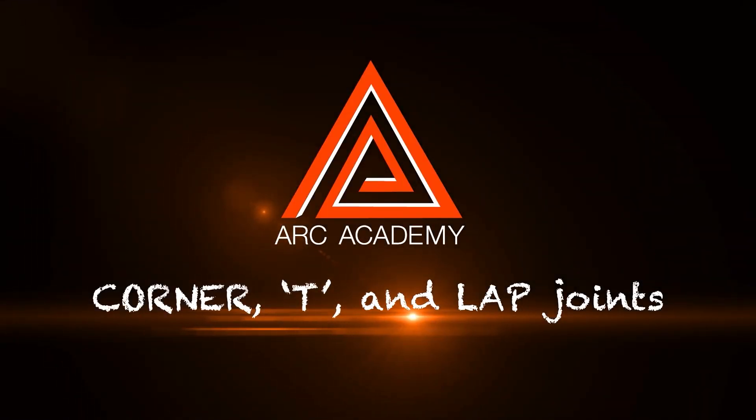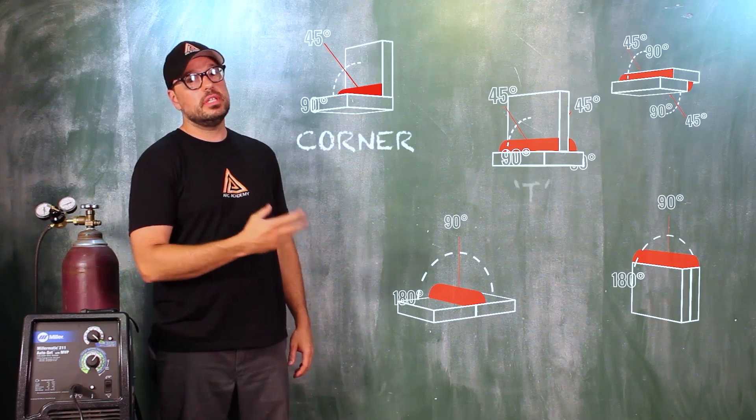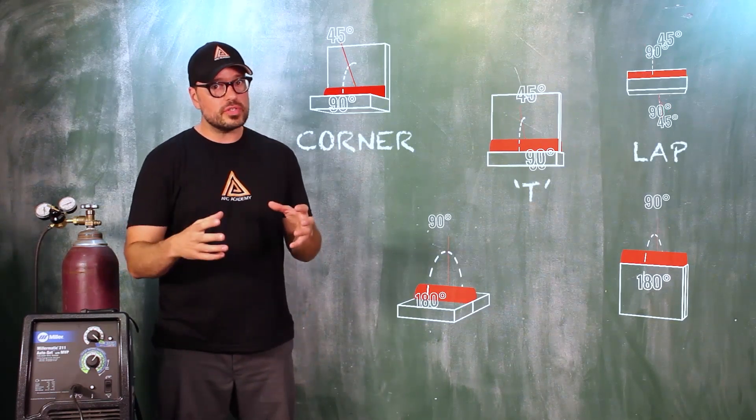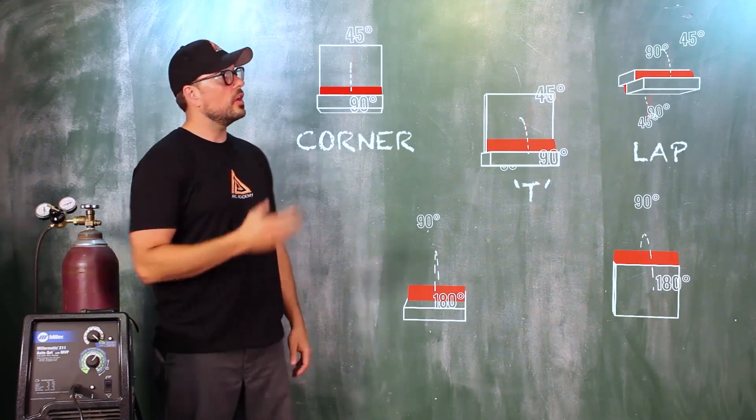Let's take these top three here: the corner joint, T-joint, and lap joint. These are all pretty much representative of corner joints.